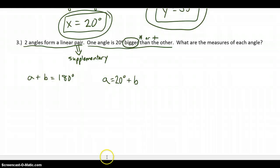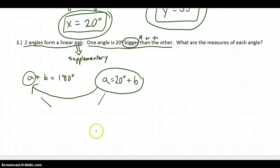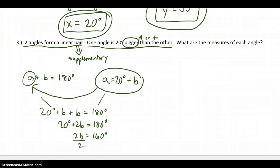Now I want to figure out how big A and B are. I have two equations. In the second equation, A equals 20 degrees plus B. In the first equation, I have an A. So I can substitute the second equation into the first to create: 20 degrees plus B, plus B, equals 180 degrees. Combining like terms, subtracting 20 from both sides, then dividing by 2, I get B equals 80 degrees.